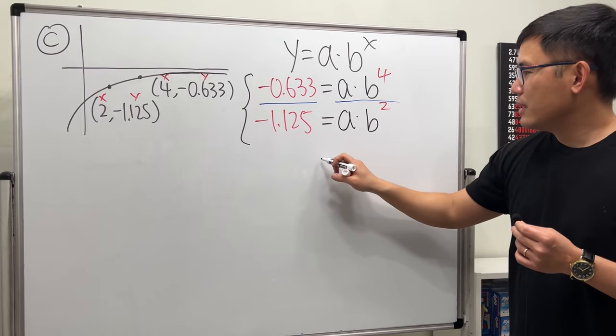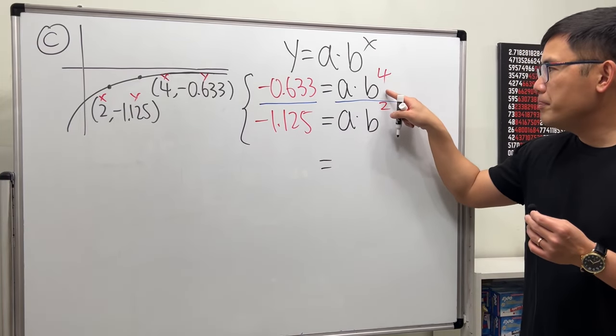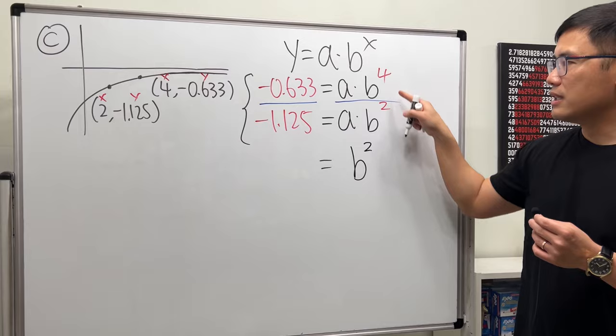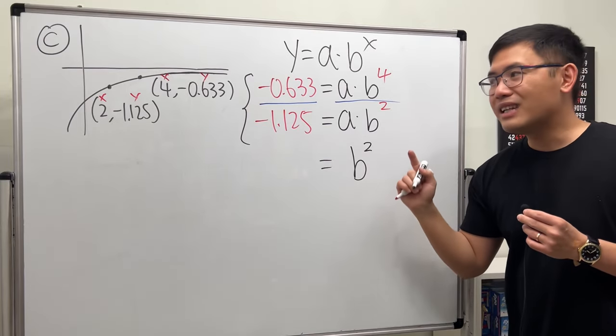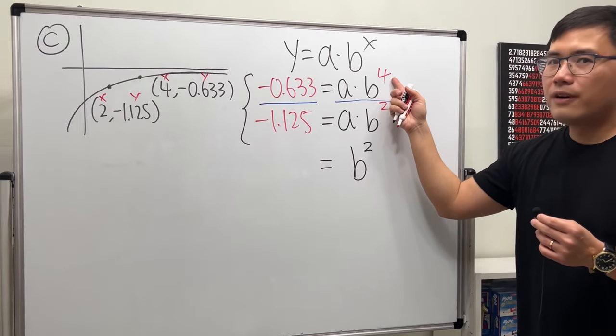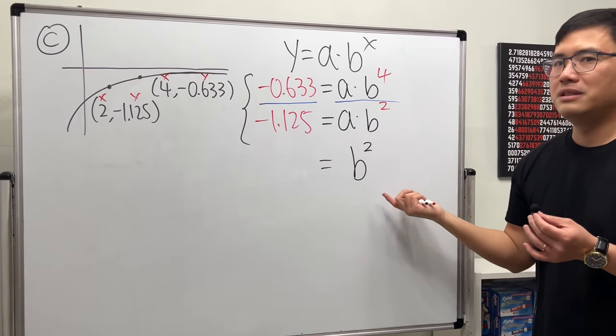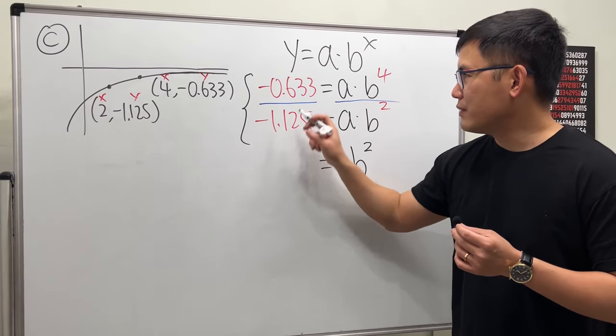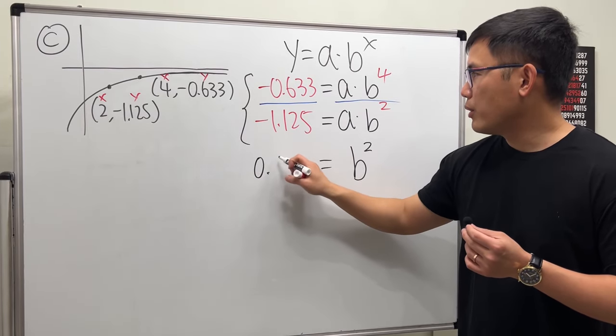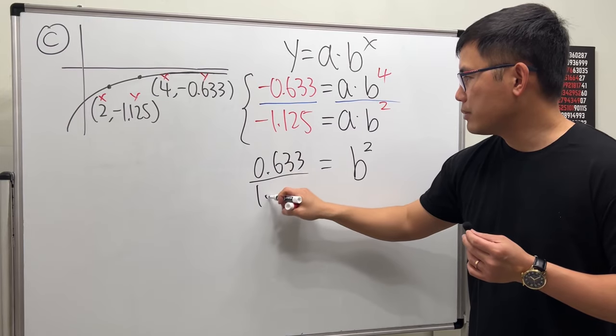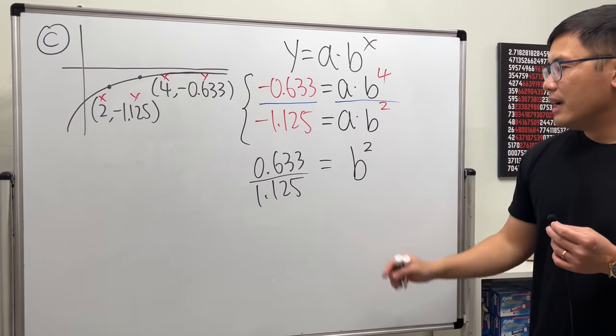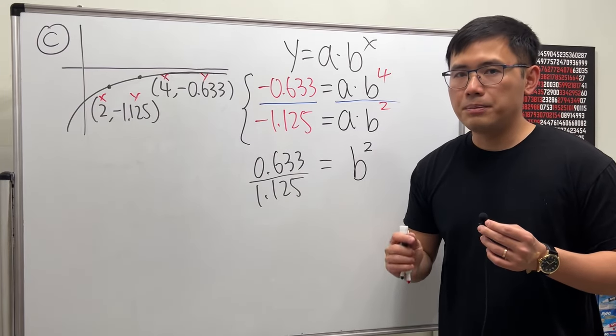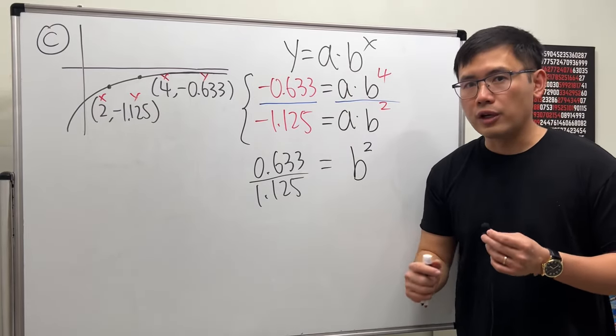So, if you take a look, a divided by a is just 1 and then b to the fourth power divided by b to the second power, you end up with b to the second power because 4 minus 2 is equal to 2. That's why earlier, if you put the bigger x value first, it will be easier because it's easier to subtract it this way. Now, for this, I'm just going to leave it as it is. We have negative divided by negative, which is positive. So, we have 0.633 over 1.125. Now, to solve for b, you can take the square root on both sides and just take the positive b value because the base for an exponential function has to be positive.